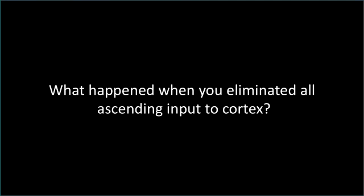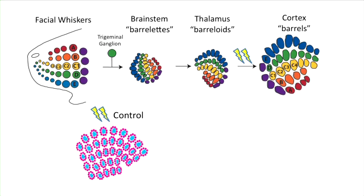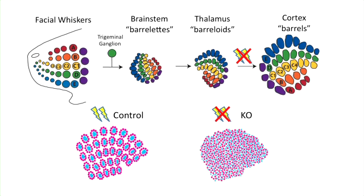What happened when we eliminated ascending input from the thalamus to the cortex? Well, normally thalamocortical axons form clusters into barrels with cortical cytoarchitecture forming rings around the thalamocortical axons. When we eliminated thalamocortical neurotransmission, cortical barrels failed to form. This eliminated a decades-long controversy about the role of activity in shaping barrel cortex development. We now know that both cortical cytoarchitecture and thalamocortical axon clustering are fundamentally dependent upon thalamocortical axon neurotransmission.